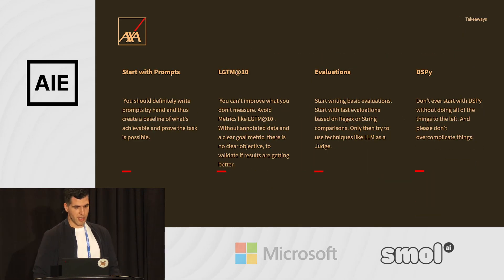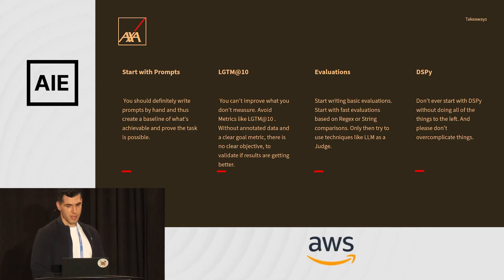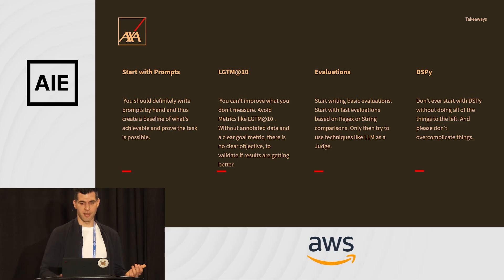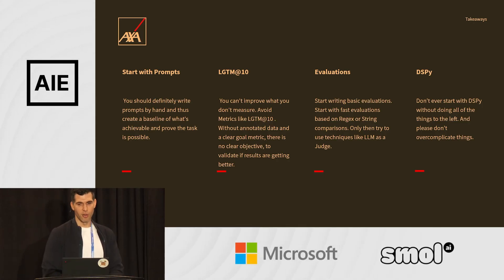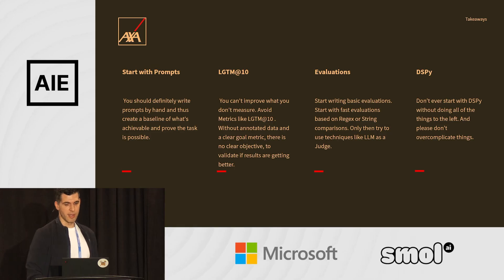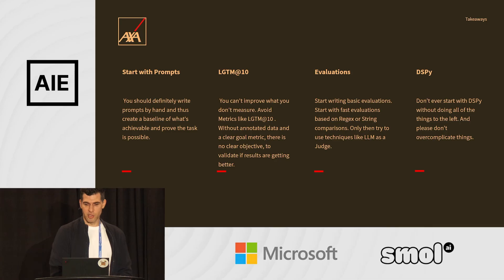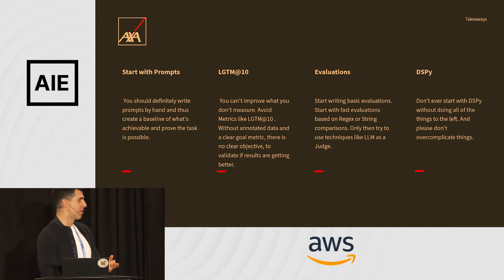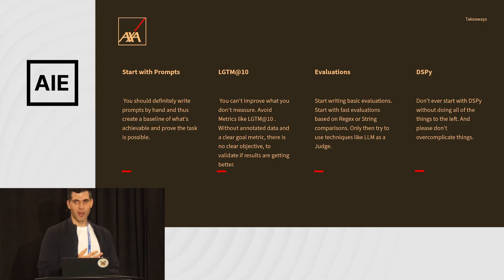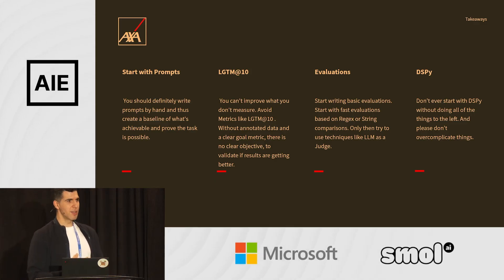Key takeaways: you should definitely write prompts by hand first — otherwise you can't know if your task is achievable at all. You can't improve what you don't measure. Avoid metrics like 'looks good to me, 10 out of 10' without annotated data or a clear goal metric — there's no clear objective to validate if results are getting better. Write basic evaluations: start with small ones like regex or string comparisons, and only then use techniques like LLM-as-a-judge. Please don't overcomplicate things — it's already super complicated. Make very, very small adjustments.